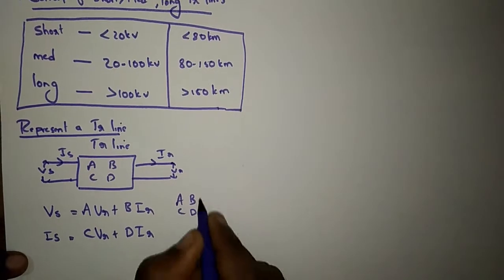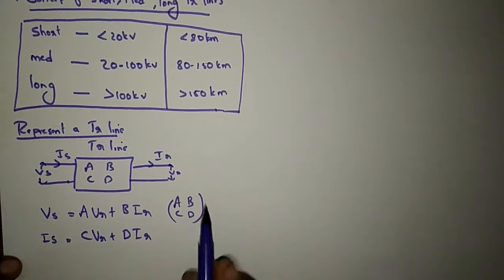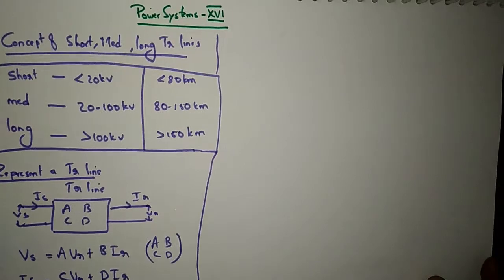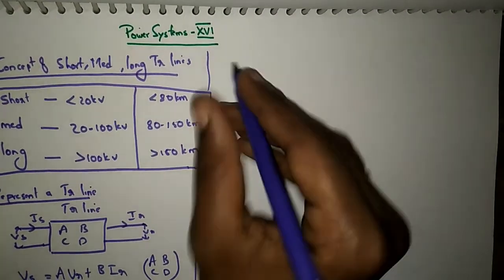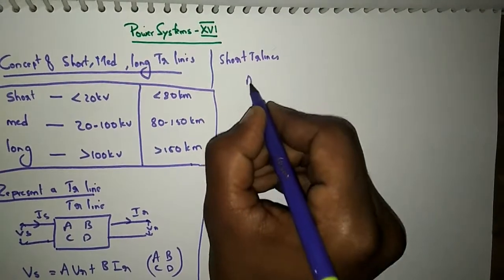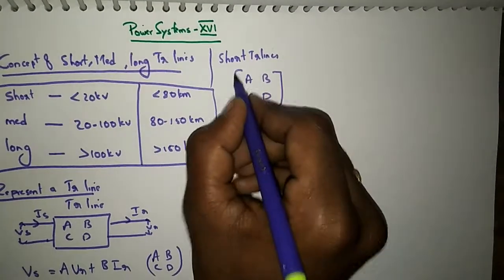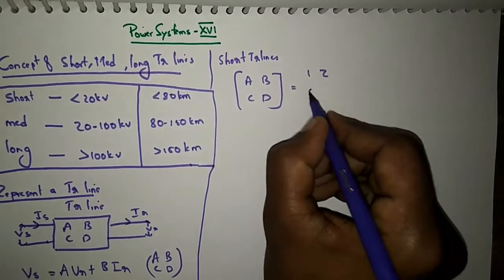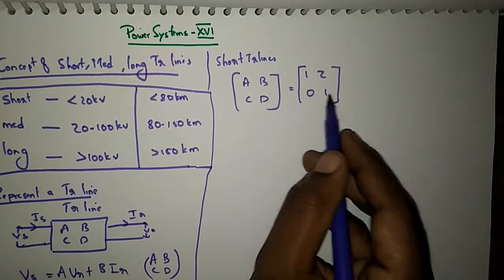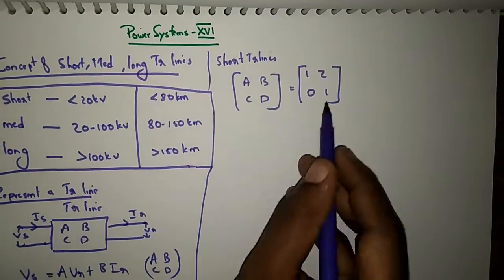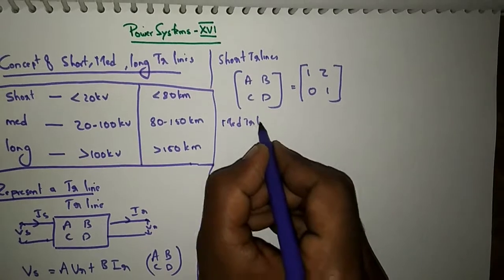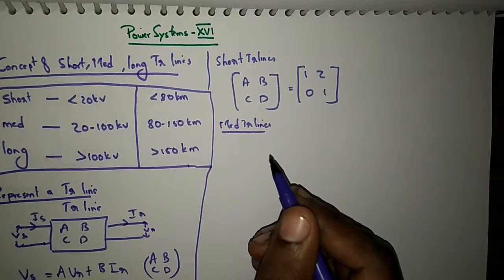The ABCD parameters differ for short, medium, and long transmission lines. For short transmission lines, the ABCD parameters are: A = 1, B = Z (impedance), C = 0, D = 1.